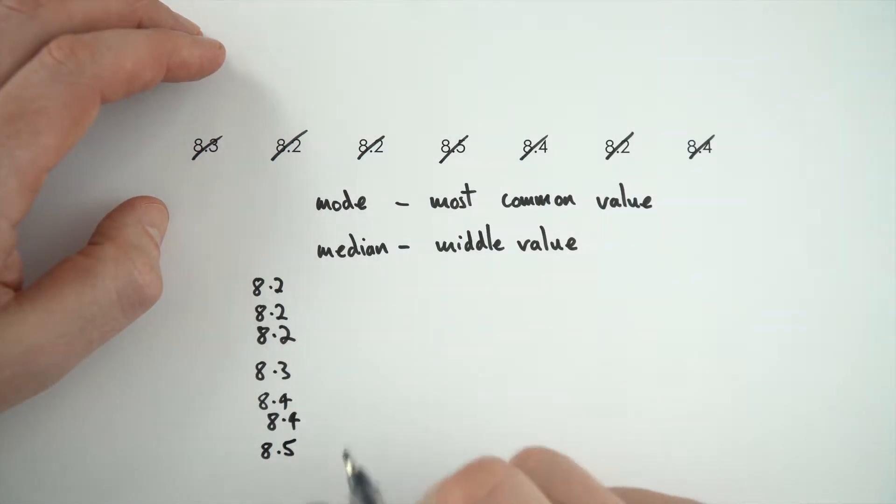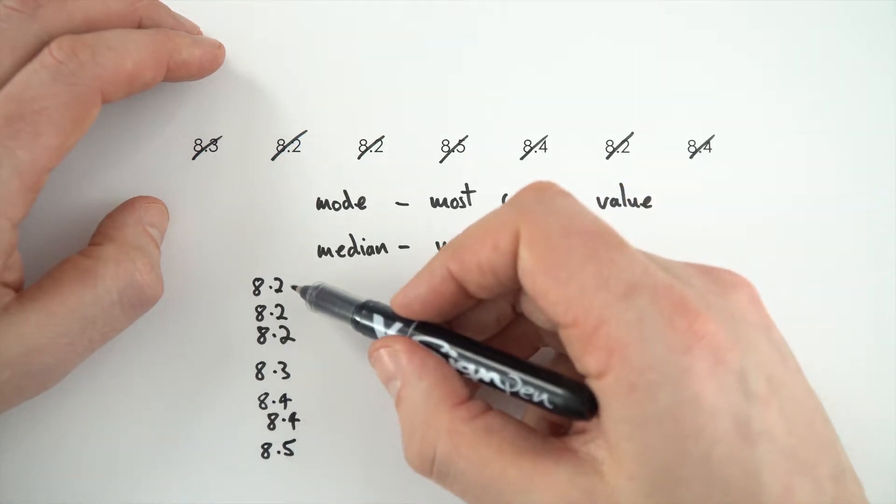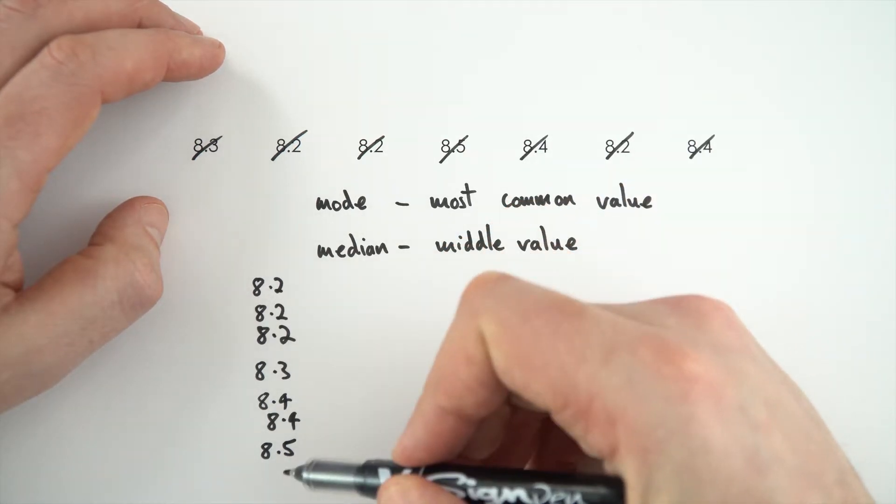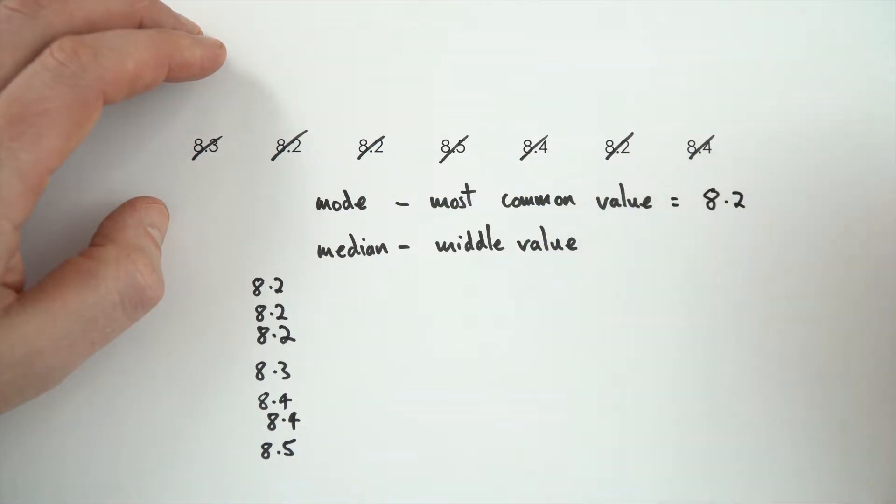So to work out the most common value, it's one of these which occurs most often, so in this case that's three times, once, twice and once. So here the mode in this example is going to be 8.2.